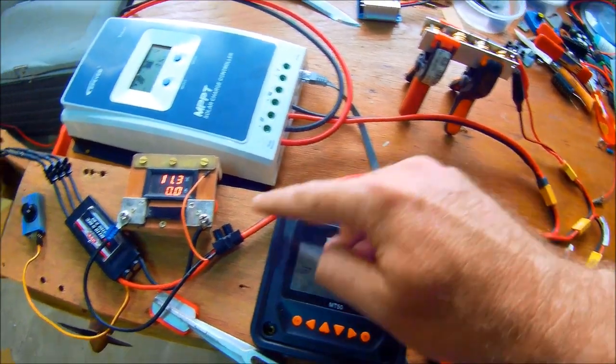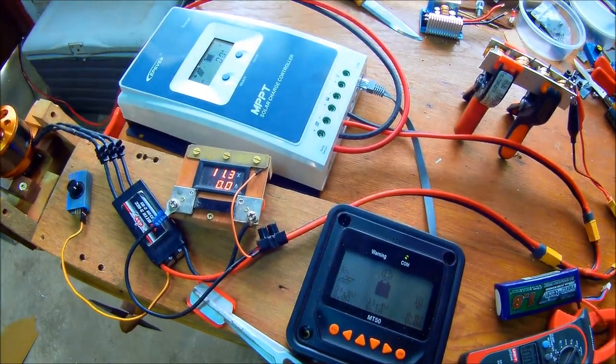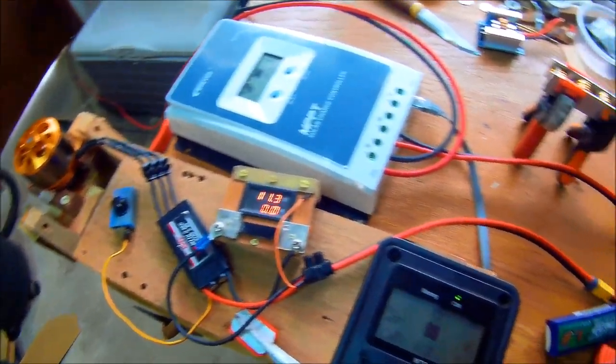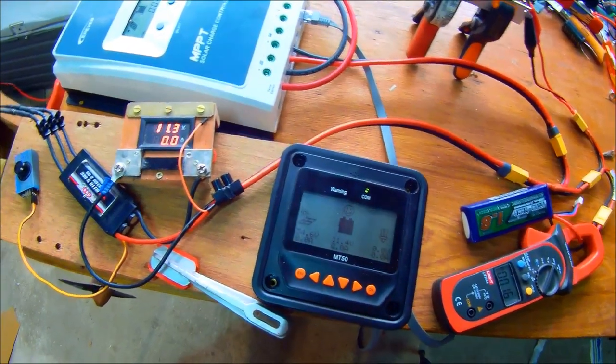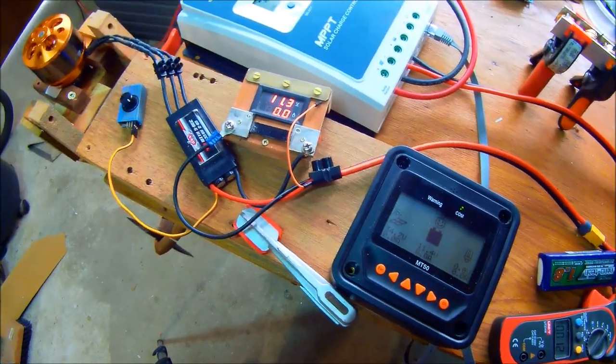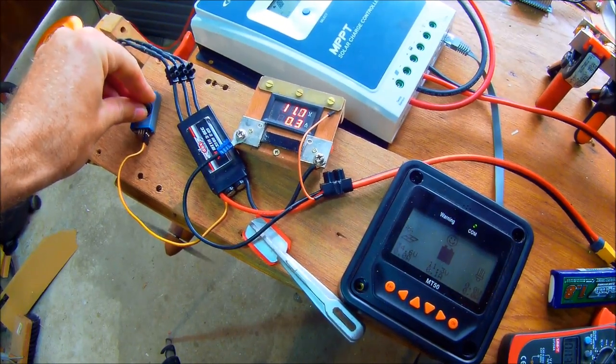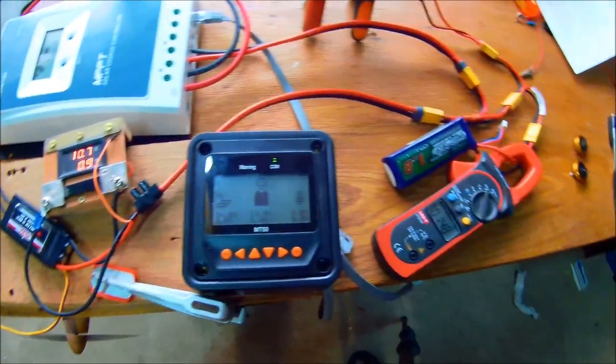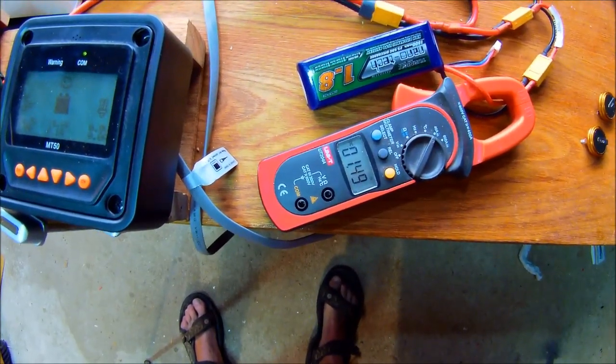That feeds into the ESC. Don't worry about all these other wires, that's just to get another power reading down to the motor. So what I'm going to do first is run the motor with both battery and supercapacitors connected, advancing it to full throttle on the servo tester.